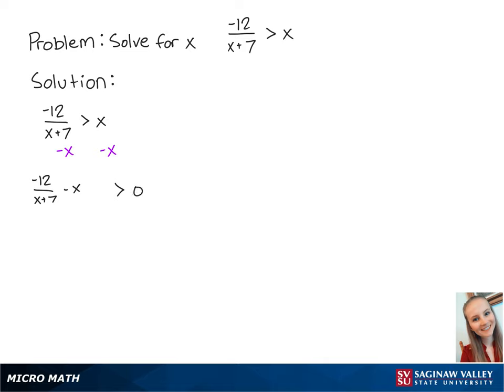Next, we want to subtract both the numbers on the left side using a common denominator of x plus 7. Simplifying the left side gets us negative x squared minus 7x minus 12, all over x plus 7, which is greater than 0.